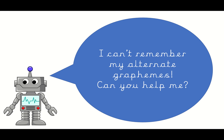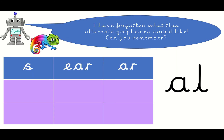Now, Rex says he can't remember his alternate graphemes. Can we help him? He's forgotten what these alternate graphemes sound like. Can you remember? He's getting a bit confused. Some of them sound like S, some of them sound like E, and some of them sound like R. What do you think this one sounds like? Well done. You're right — it sounds like R. A-else sounds like R.